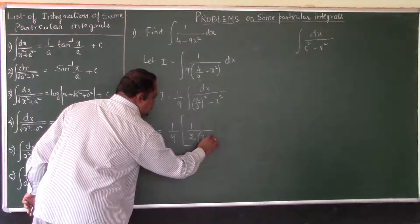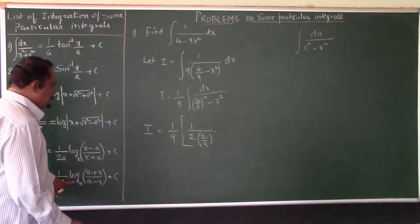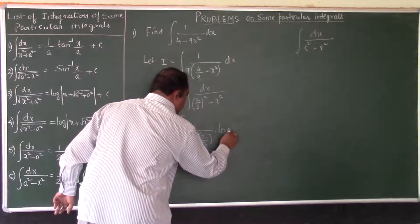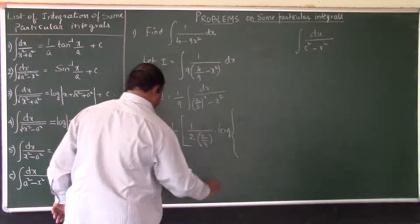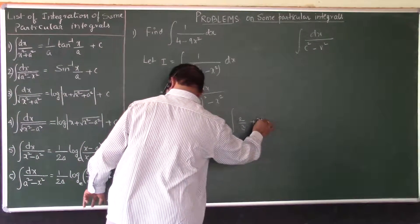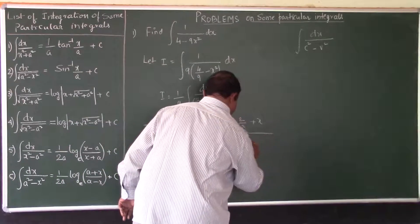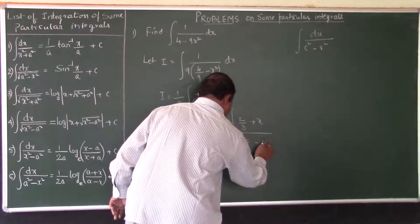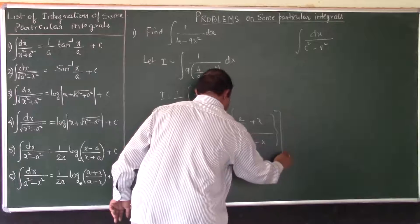Into logarithm of A plus x. A is 2 by 3 plus x divided by A minus x. 2 by 3 minus x plus C.